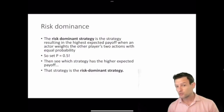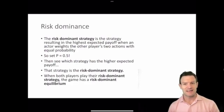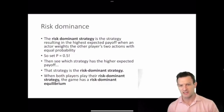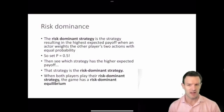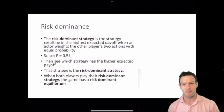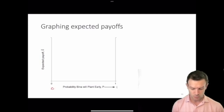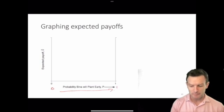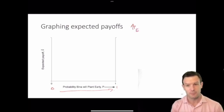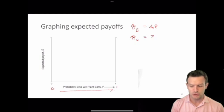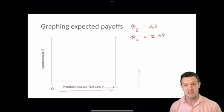The strategy with the higher expected payoff when P equals 0.5 is the risk dominant strategy. If both players play their risk dominant strategies, the game has a risk dominant equilibrium. To visualize this, along the x-axis we have the probability that Bina will play plant early, equal to P, going from 0 to 1. The expected payoff for planting early, pi-hat-E, equals 4P, and pi-hat-L, the expected payoff to playing plant late, equals 2 plus P.